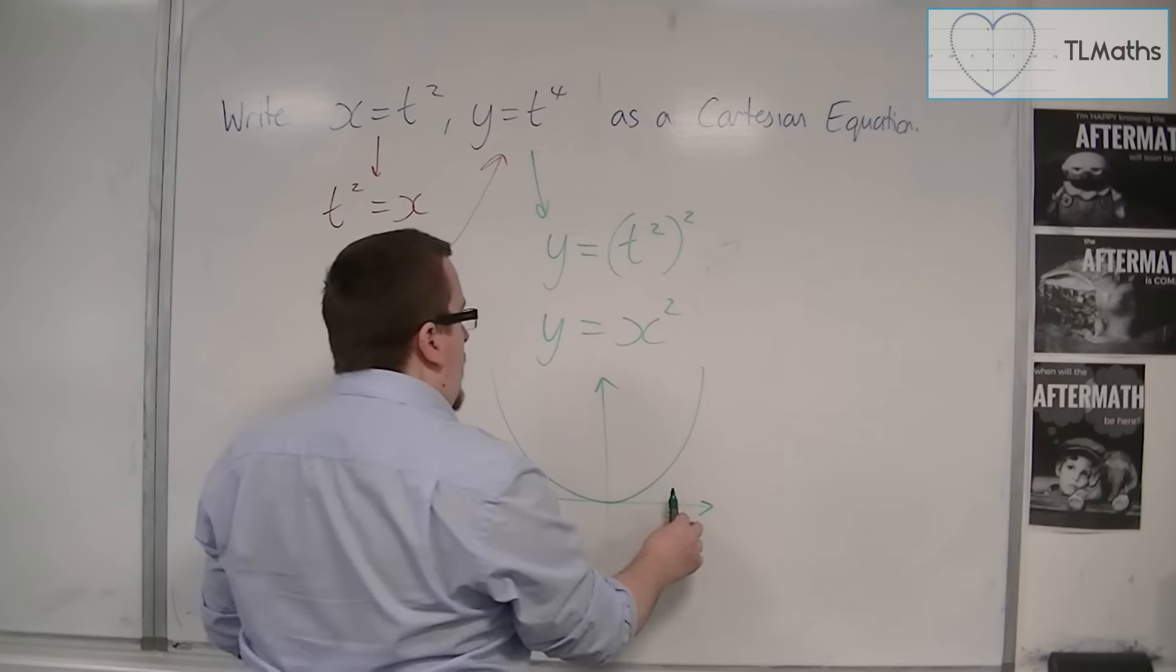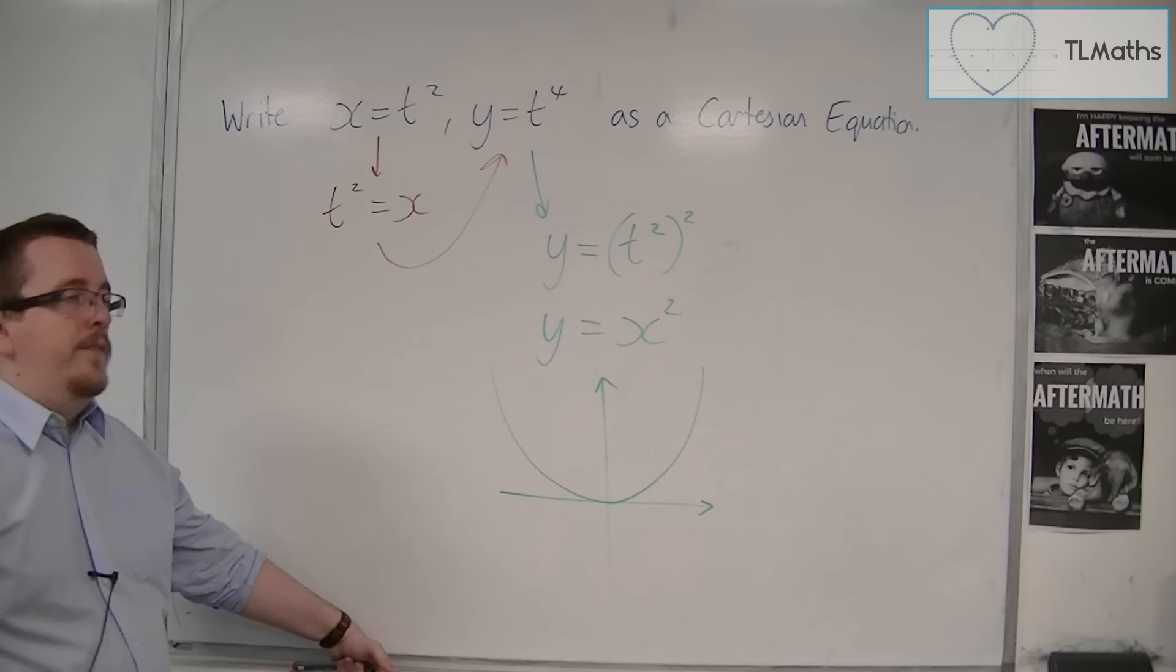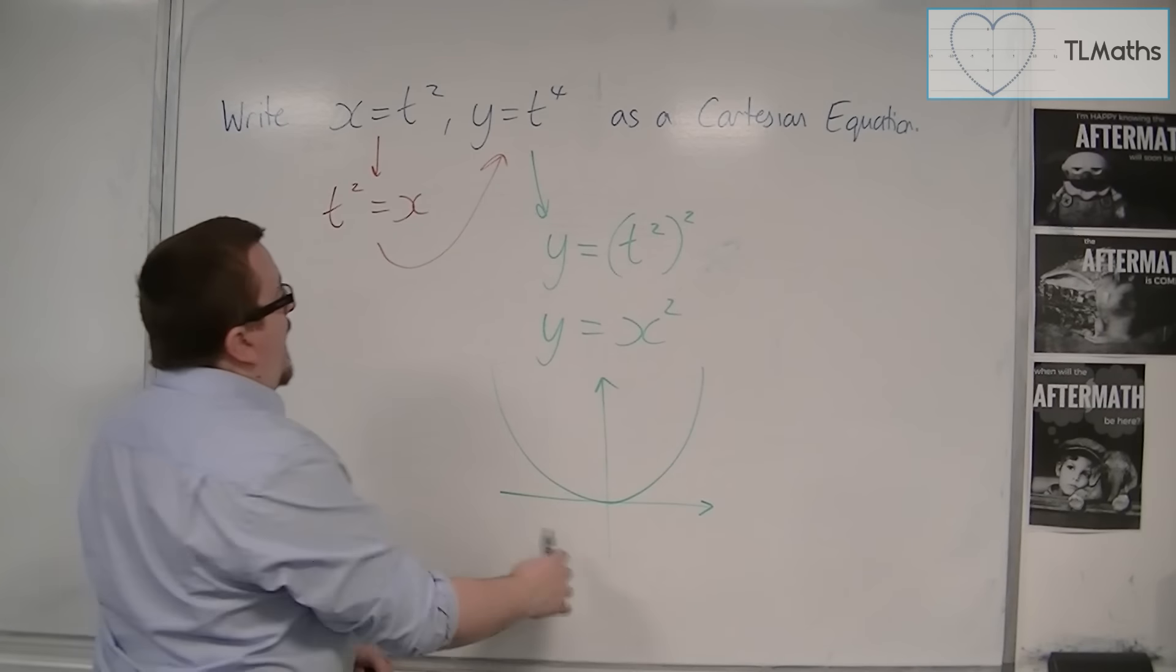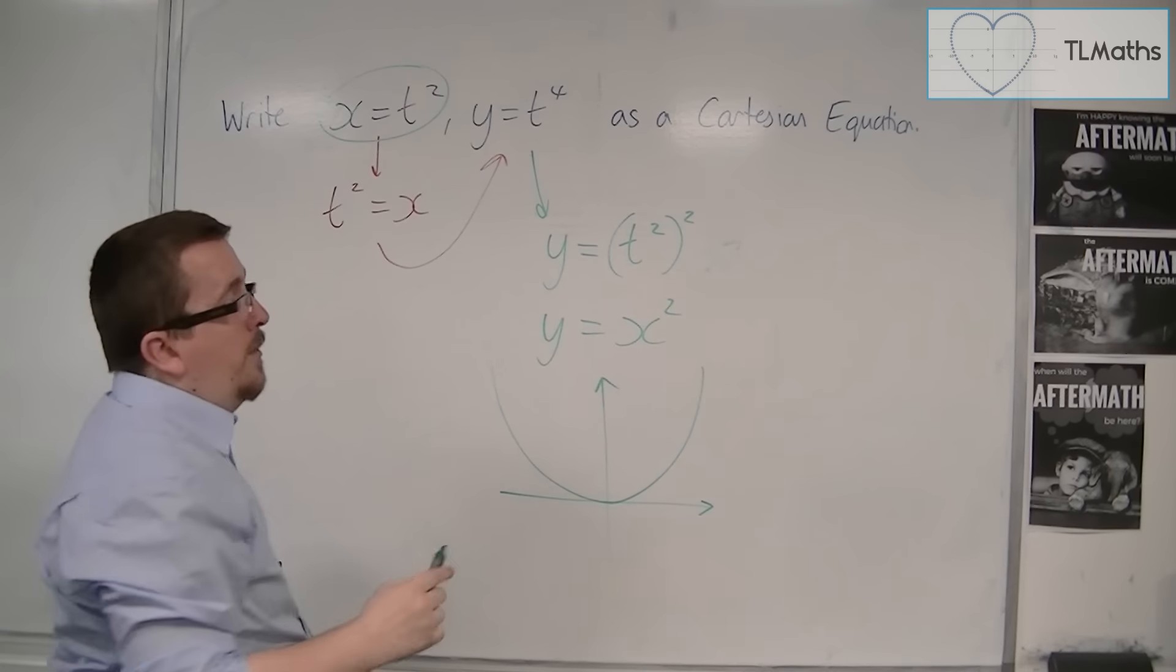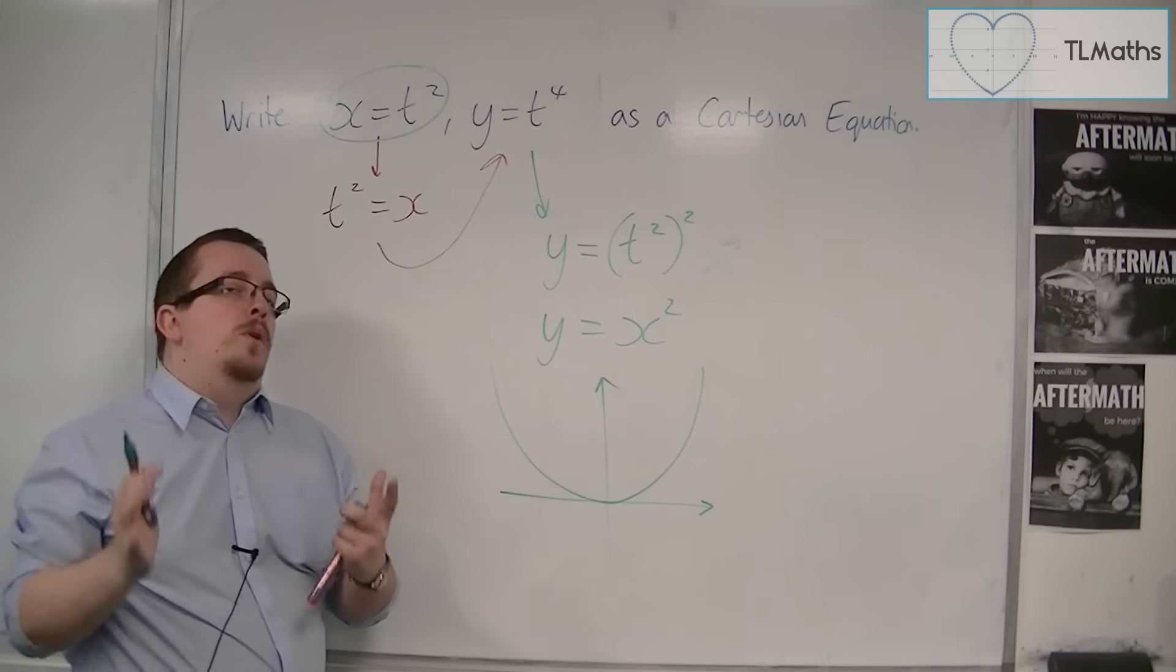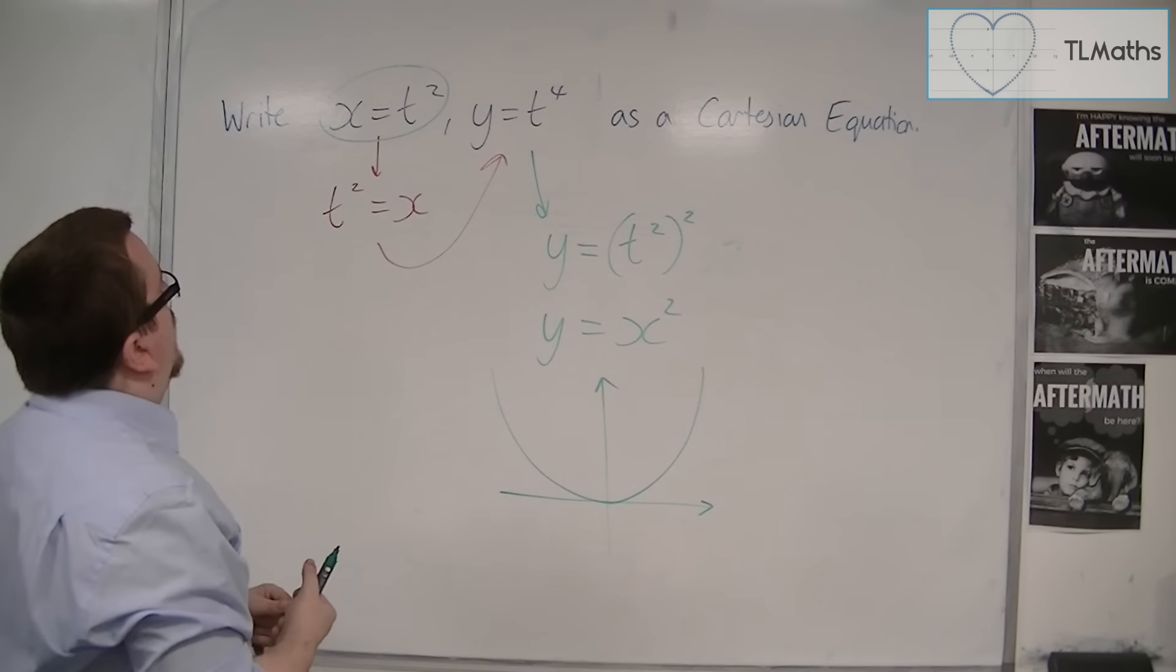So as the x values can be both positive and negative, that must mean that this can also be both positive and negative if they were to describe exactly the same curve.